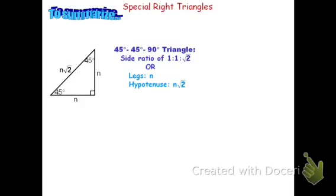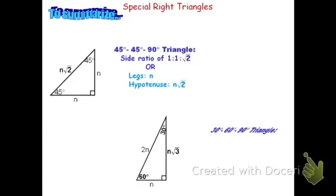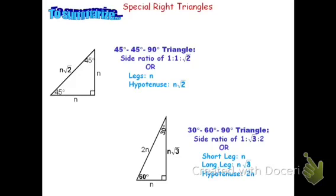In these problems, we'll be told either the length of one of the legs or the hypotenuse, and we can use that to solve for the other missing pieces. The other type of special right triangle is the 30-60-90 triangle. In a 30-60-90, the ratio is 1, root 3, 2. Or, if the short leg is n, the long leg is n root 3, and the hypotenuse is 2n — so the hypotenuse is twice the length of the short leg.